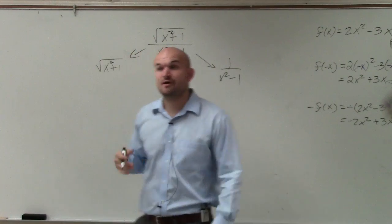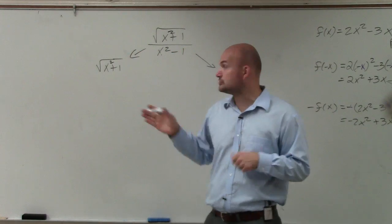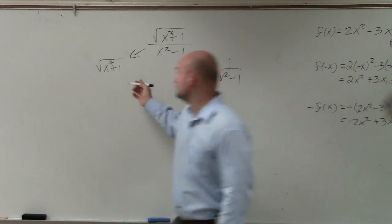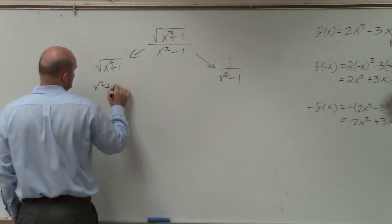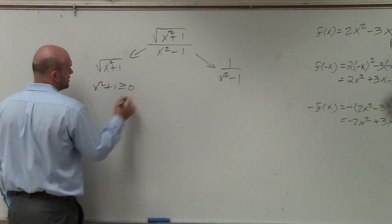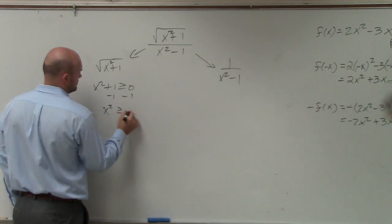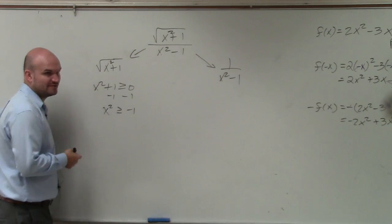All right. First of all, remember, to identify the restriction for our radical, we would say x squared plus 1 has to be greater than or equal to 0. Well, when I go ahead and solve, I can't take the square root of a negative number, right?